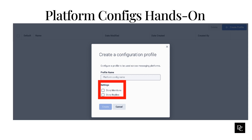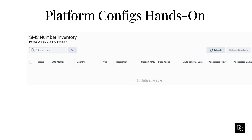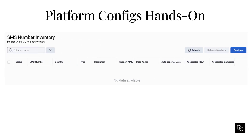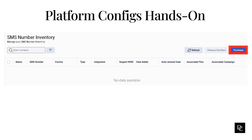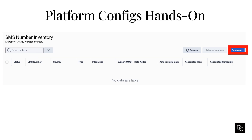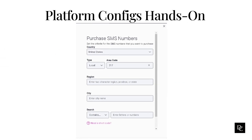Next up, SMS Number Inventory. The SMS Number Inventory page provides you with a list of your SMS numbers and the tools to manage them. The column headers on the page allow you to identify the number, its status, the type of number, and the purchase date. If your SMS Number Inventory contains many numbers, use the filter feature to narrow your display to only those numbers you want to see. The SMS Number Inventory page offers the capability to purchase numbers. To purchase a number, click Purchase. When the purchase form appears, fill in the appropriate fields to search for the number to purchase.